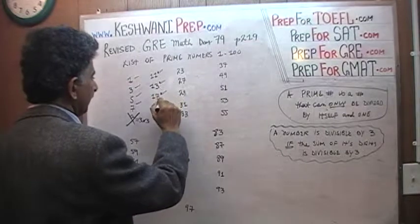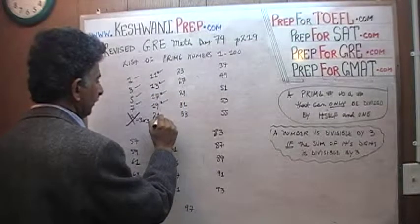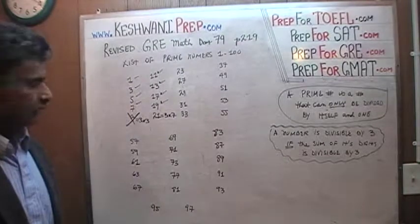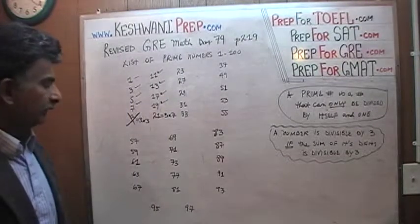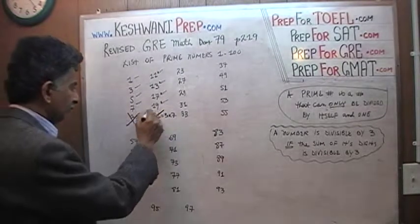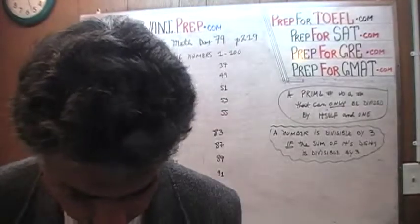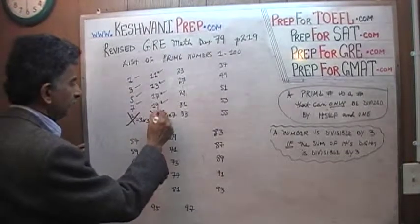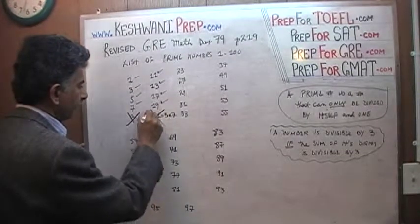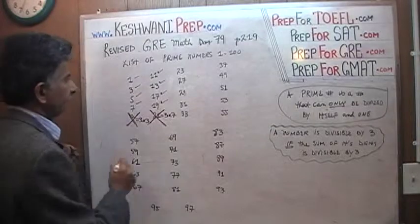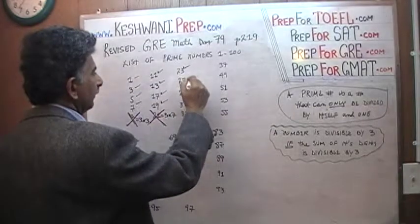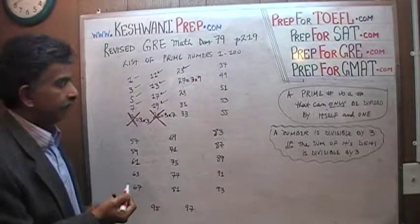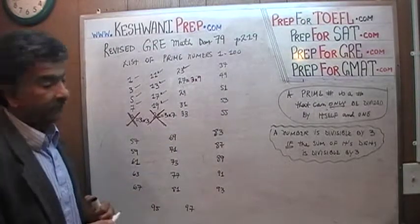11 is fine. 13 is fine. 17 is fine. 19 is fine. What about 21? 21 can be divided by 3 and 7. 21 equals 3 times 7 — that's no good. 23 is fine. 27 can be written as 3 times 9, so that's no good. It can be divided by 3 and 9.